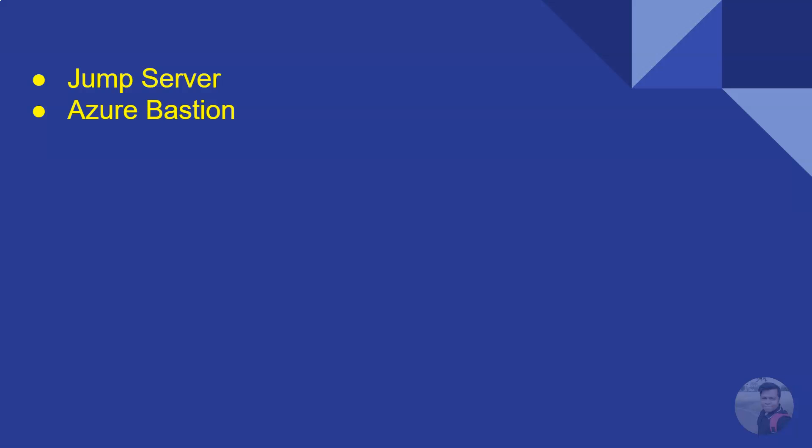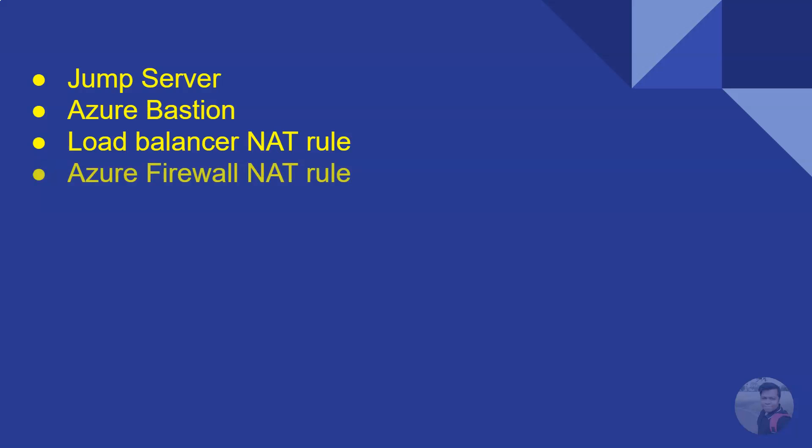You can also create a Network Address Translation rule in an Azure Load Balancer and use that to connect to a private virtual machine. Similarly, you can create a Network Address Translation rule in Azure Firewall and use that to connect to a private virtual machine as well.